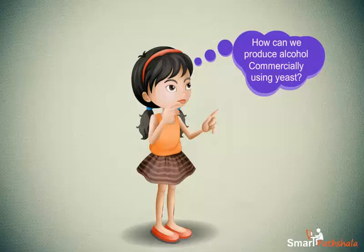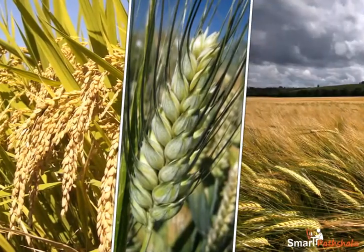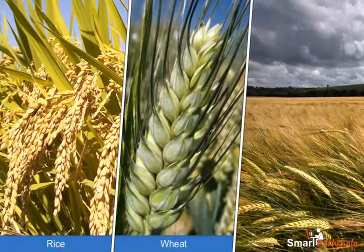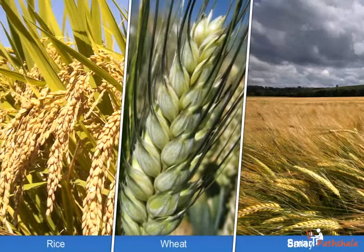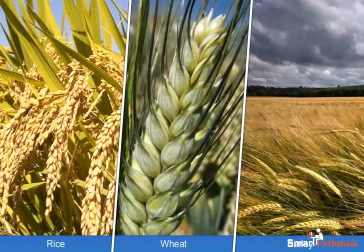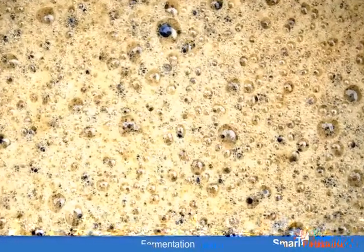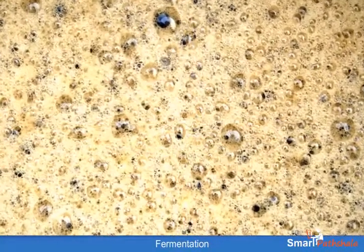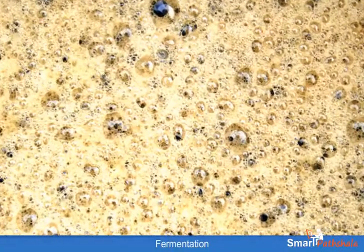To produce alcohol, yeast is grown on grains like rice, wheat, barley, etc., which are rich in natural sugars. Yeast converts the sugars present in these grains into alcohol, and the process of conversion of sugar into alcohol is called fermentation.